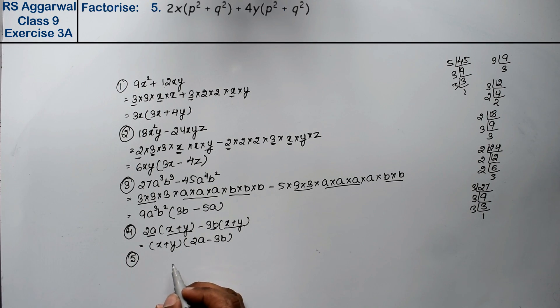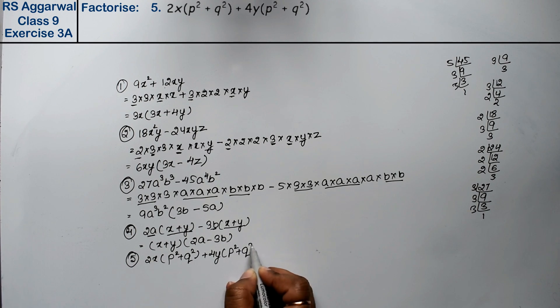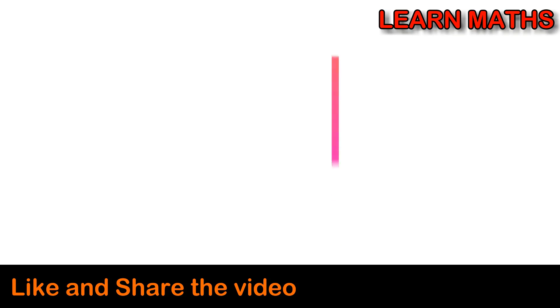Let's do 5th question. 5th question is 2x(p² + q²) + 4y(p² + q²). Right? Now you can see p² + q² is also common. So p² + q² is common. Now what will be left? 2x + 4y. If it was 2x, then it was 2x. And with it 4y, then it was 4y. That is the answer. Thank you.